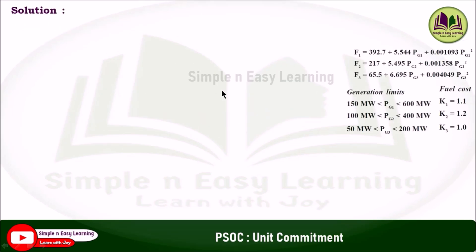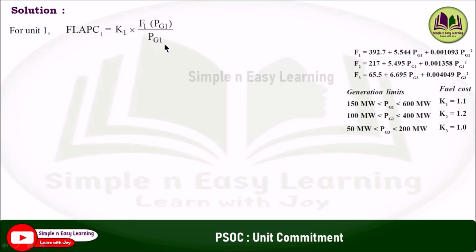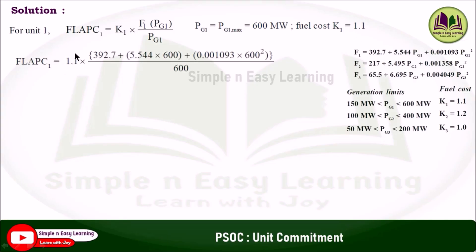Considering the given data, for unit 1: FLAPC_1 is equal to K1 multiplied by F1(PG1) divided by PG1. PG1 max is 600 and fuel cost K1 is equal to 1.1. Substituting these values, with the fuel cost function in the numerator and PG1 max in the denominator, you get 7.53.